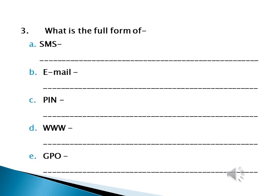In question three, you are given some abbreviations — short forms — for which you have to write the full form. There are five short forms: A is SMS, B is email, C is PIN, D is WWW, and E is GPO. You have to write the full form for each.